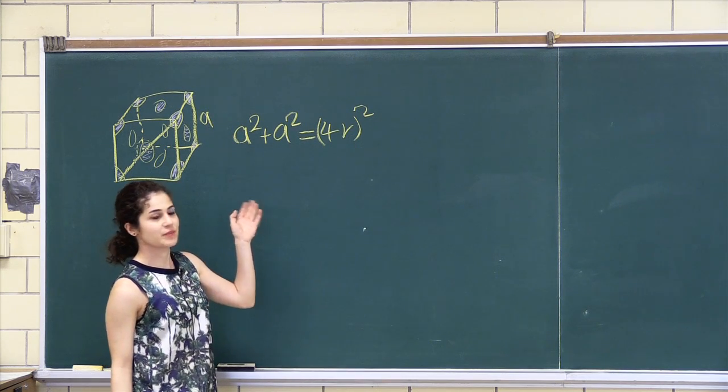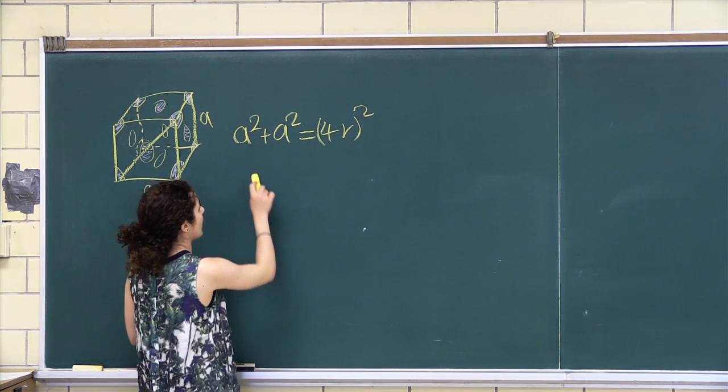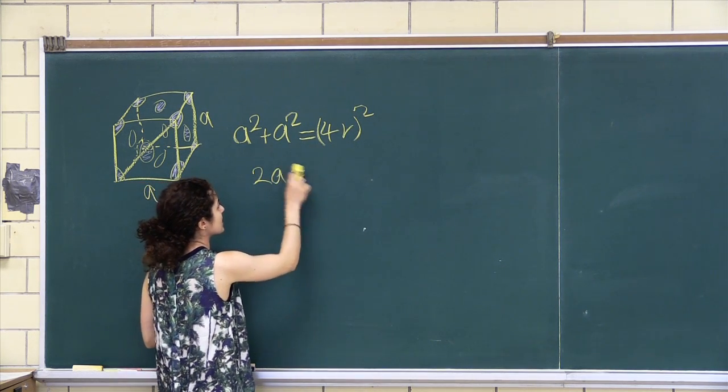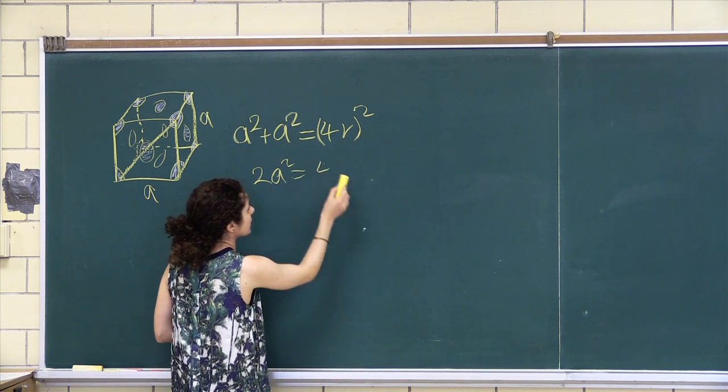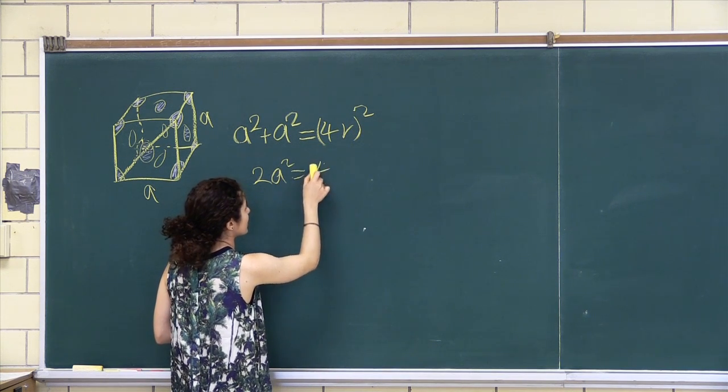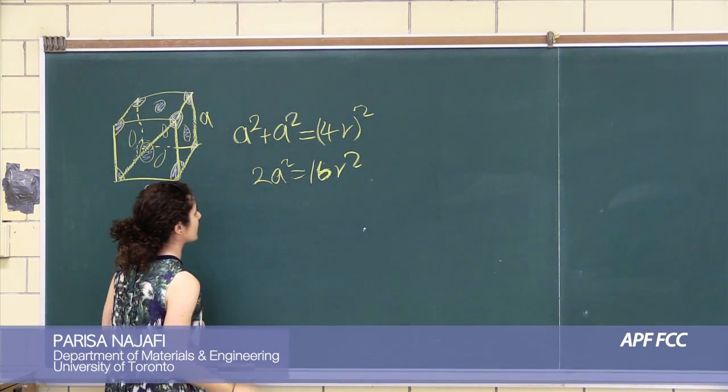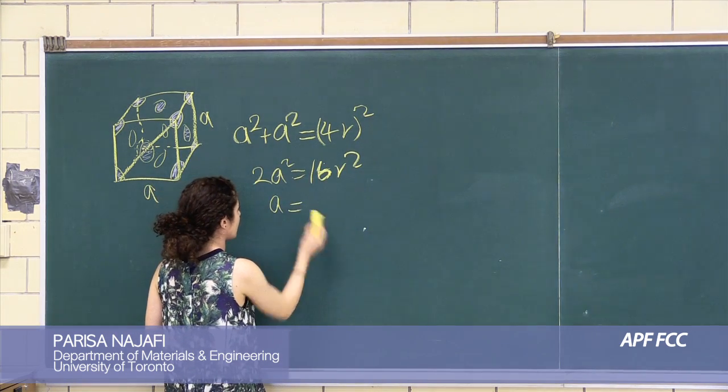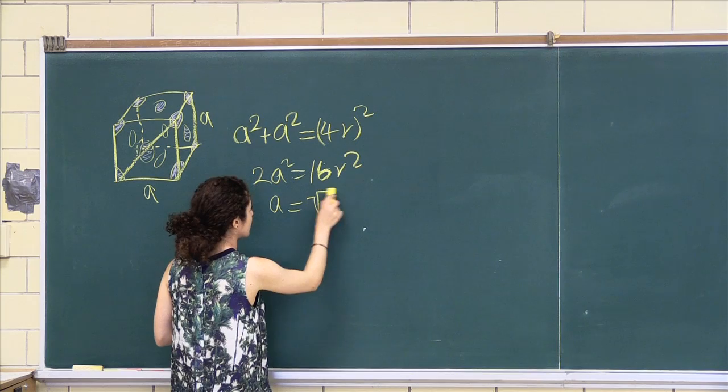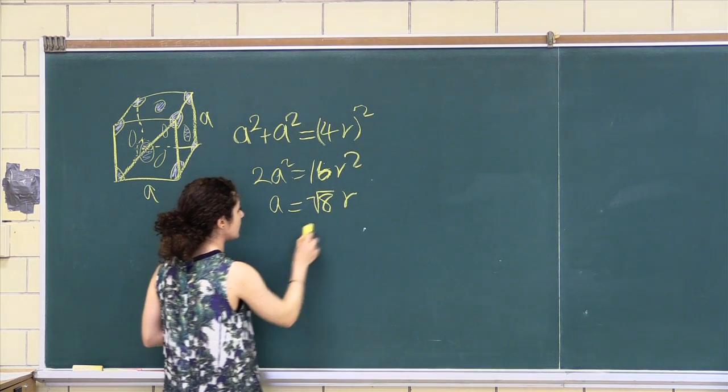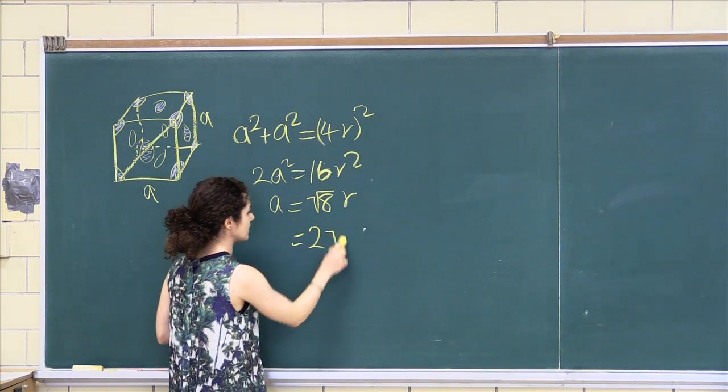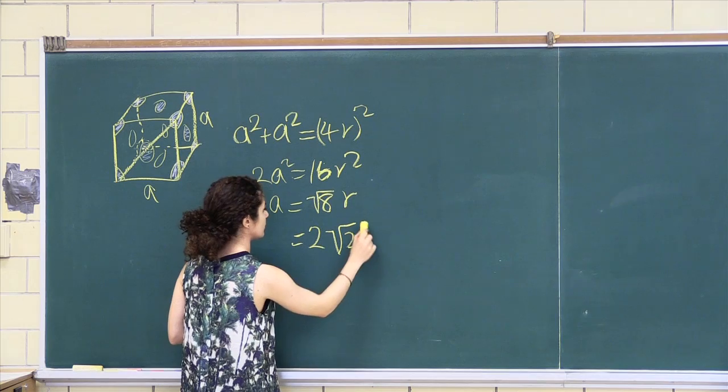Now you have a relationship between the A and the R, and you can just simply solve for it. So 4 squared is 16 actually, 16 R squared, and A is root 8 R, or more commonly known as 2 root 2 R. That's fine.